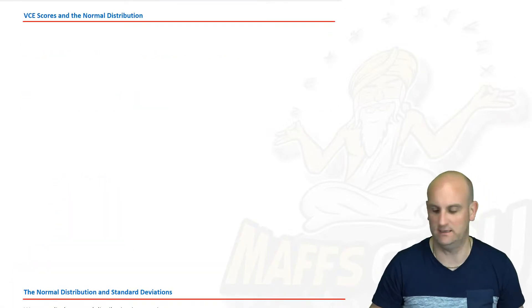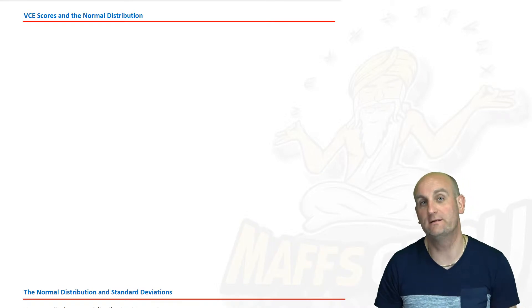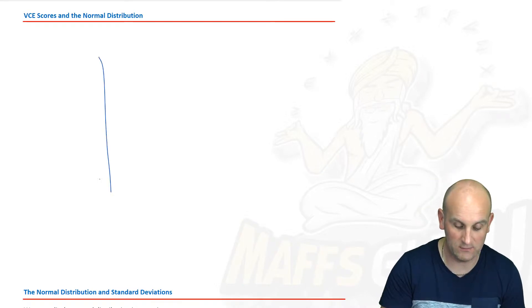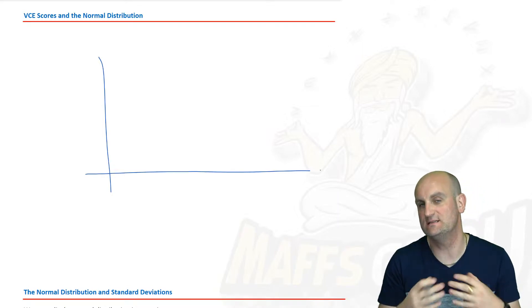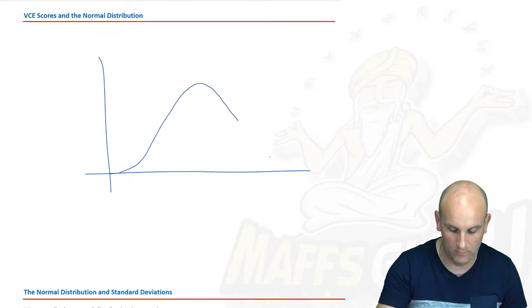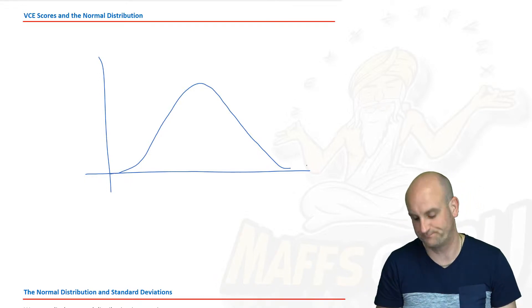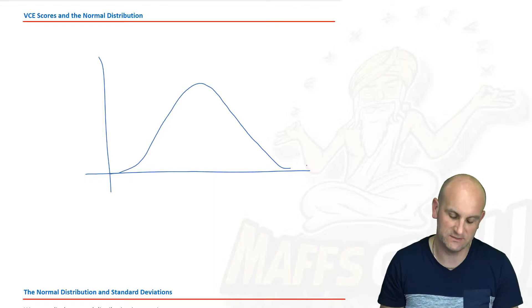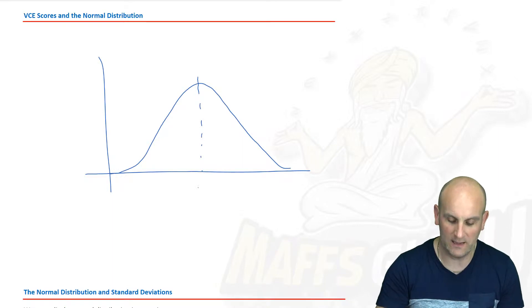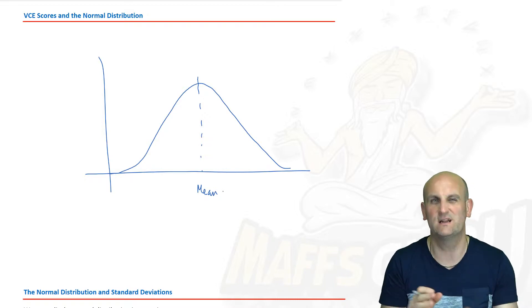If you are over here in Australia, you're about to undoubtedly head in towards your VCE. The VCE is assessed on a bell curve, and a bell curve is actually nothing more than a normal distribution and it looks very much like that. The reason it's called a bell curve is it looks like a bell upside down.